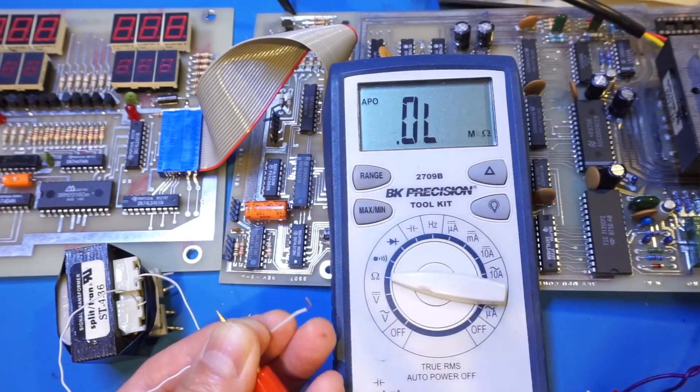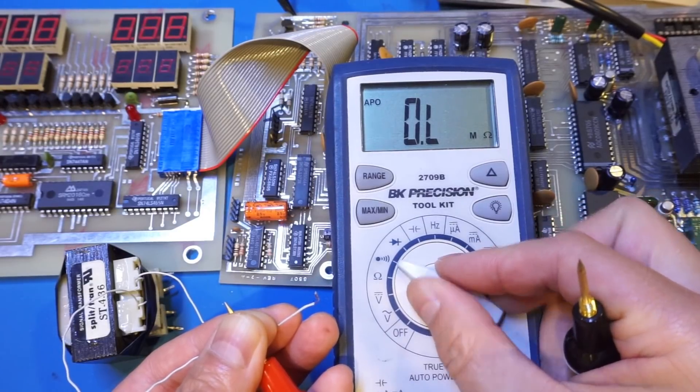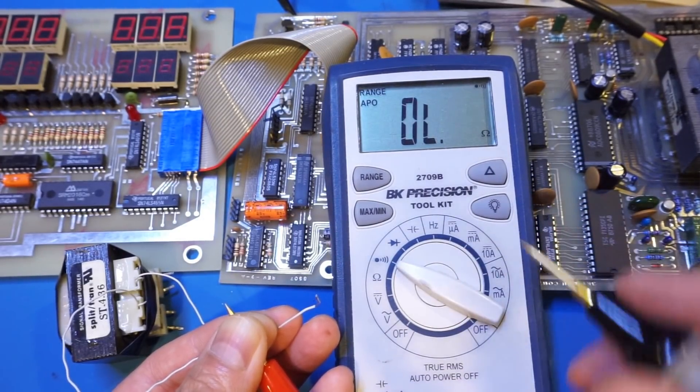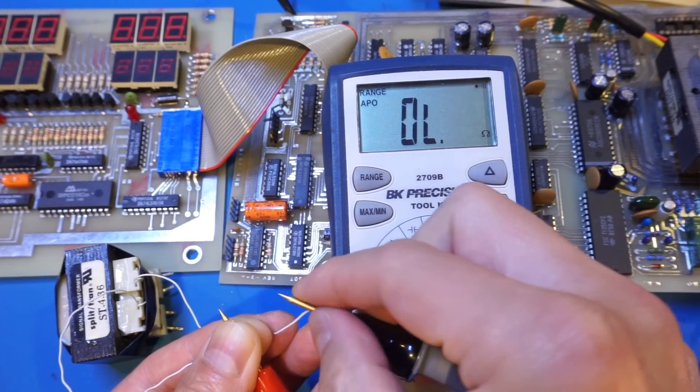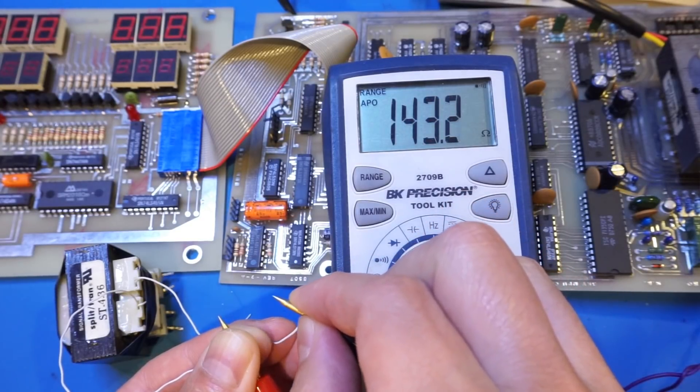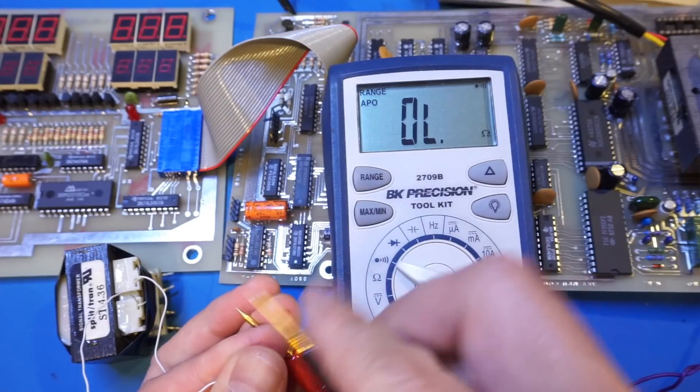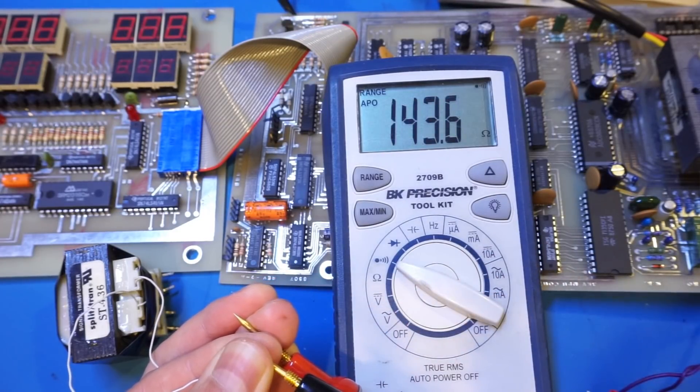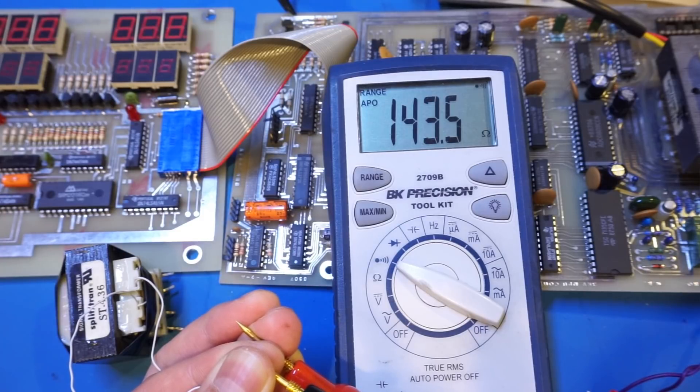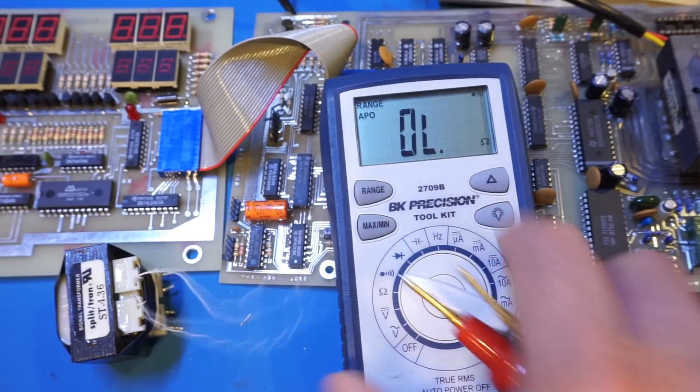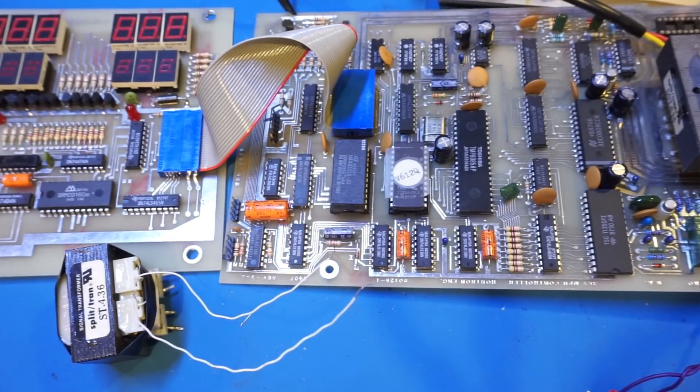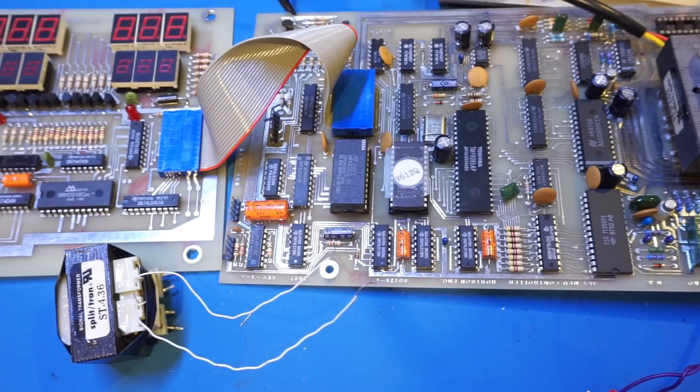So I then went to the beeper mode, continuity mode rather, and took a look. It's 143 ohms. So it clearly was connected correctly. And you can see that it doesn't matter which side we measure, it is 143 ohms.